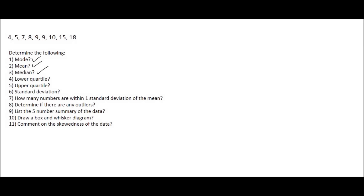Number four asks for the lower quartile. The lower quartile means that if you divide the data into quarters, they want the lower quarter. The halfway point is the median, so we ignore that and look to the left. We have the numbers four, five, seven, and eight. The halfway between those gives a value between five and seven, which is six.